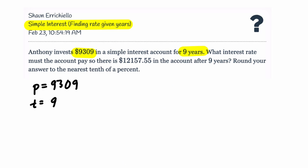What are we trying to find? We're trying to find, it says here, what interest rate must the account pay? So there is $12,157.55 in the account after 9 years. So what interest rate? That's what we're trying to find. R is our unknown.